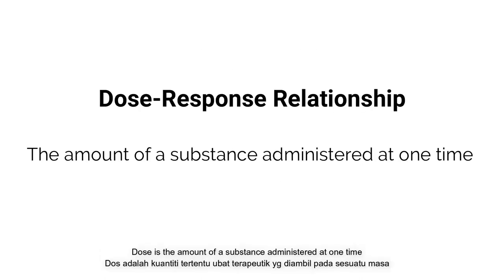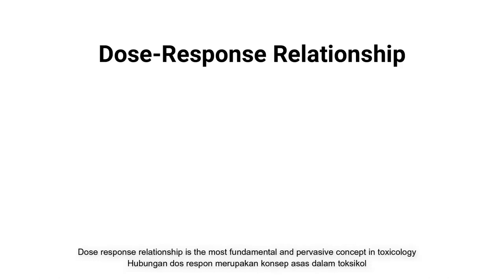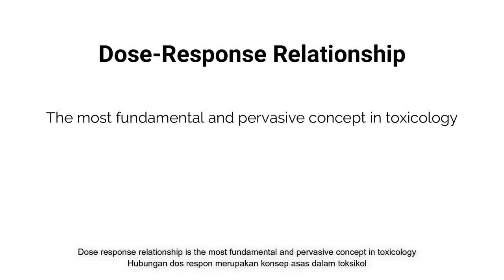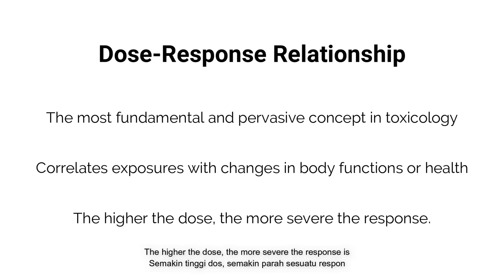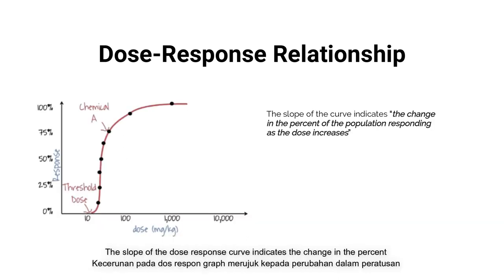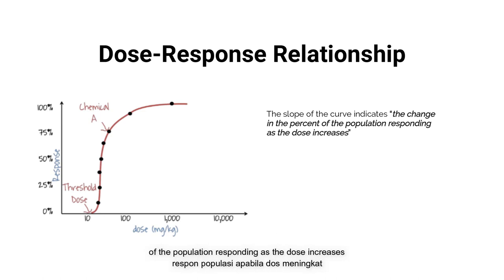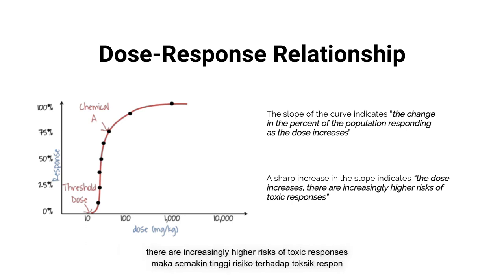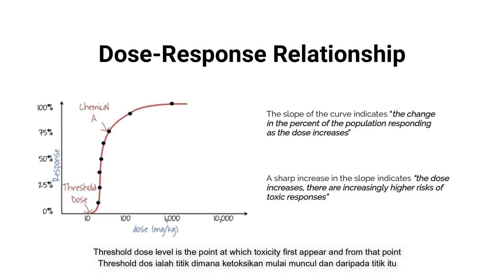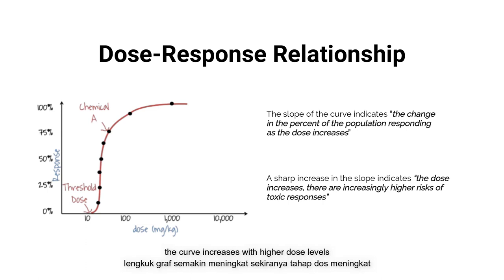Dose-response relationship: dose is the amount of a substance administered at one time. The dose-response relationship is the most fundamental concept in toxicology. It correlates exposures with changes in body functions or health — the higher the dose, the more severe the response. The slope of the dose-response curve indicates the change in the percent of the population responding as dose increases. A sharp increase in slope indicates increasingly higher risk of toxic responses. The threshold dose level is the point at which toxicity first appears, and from that point the curve increases with higher dose levels.